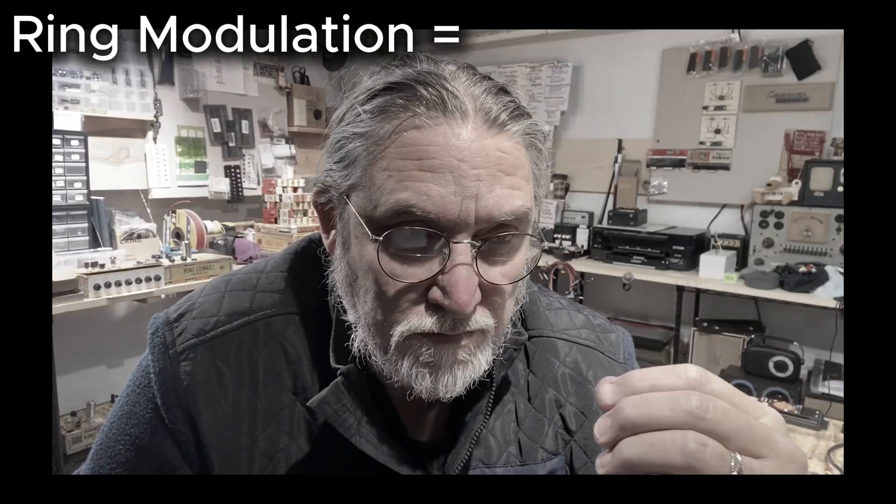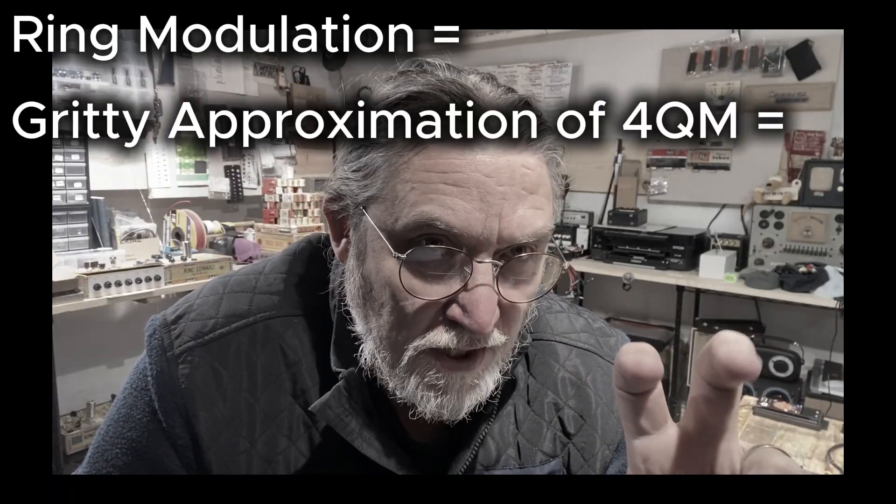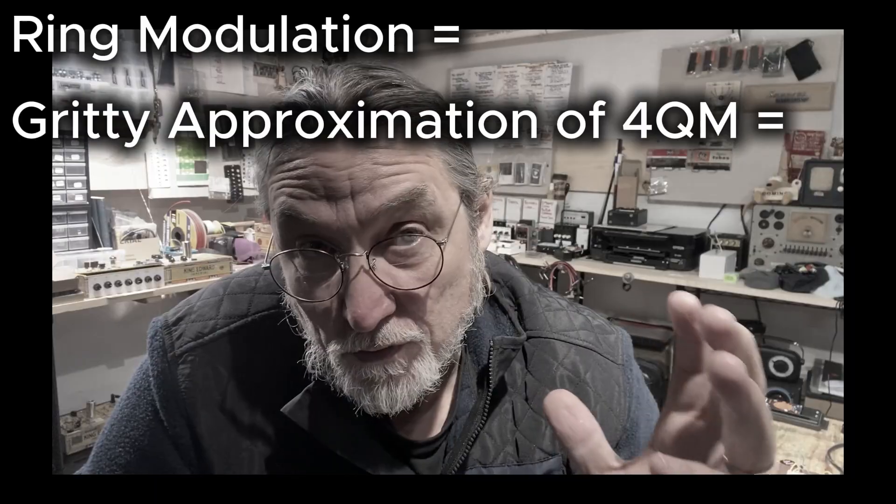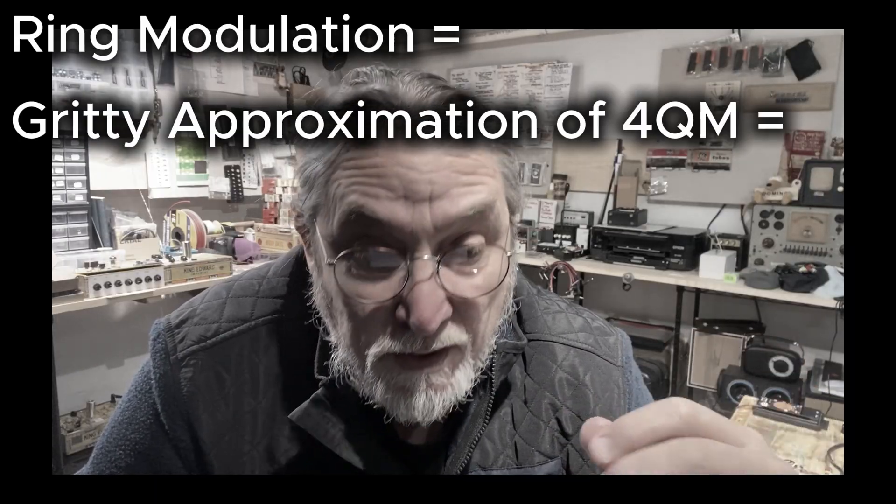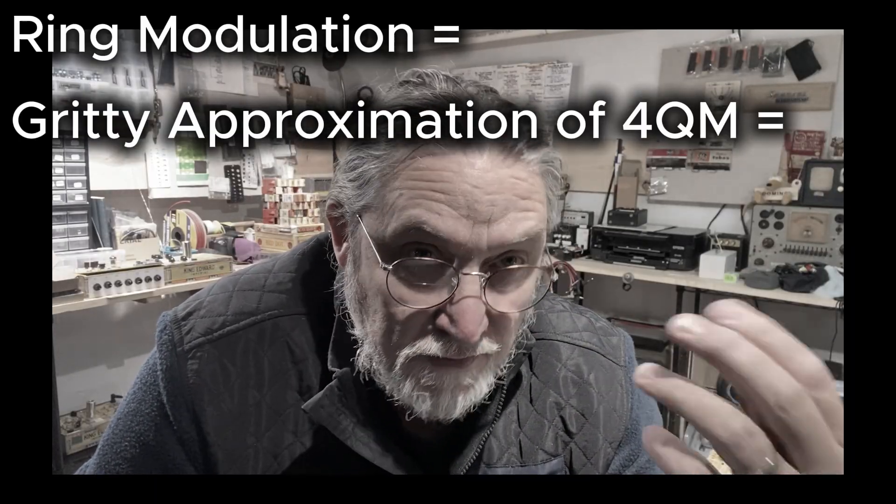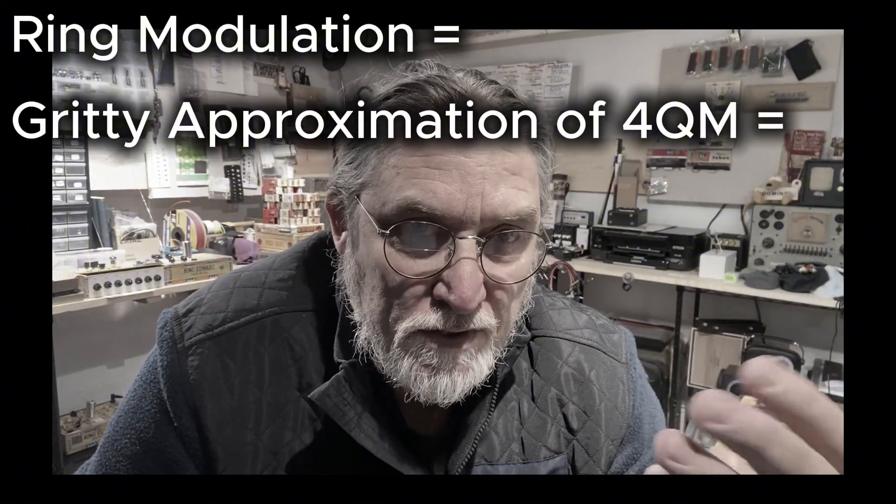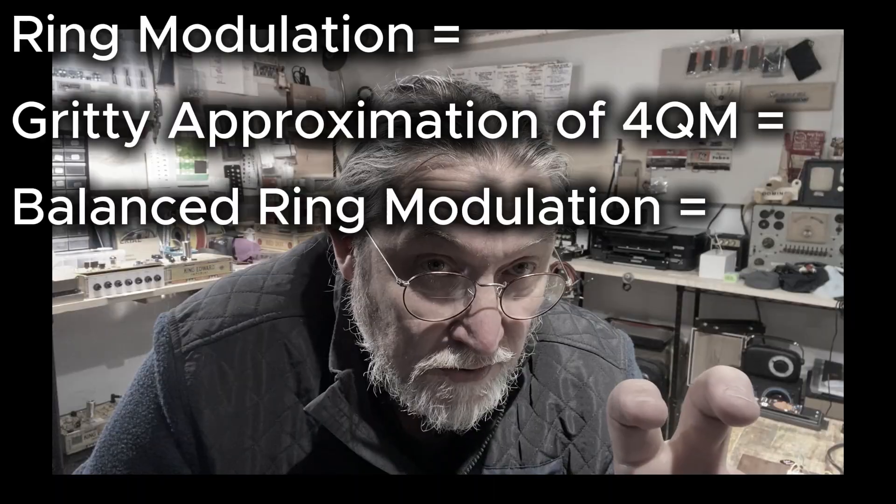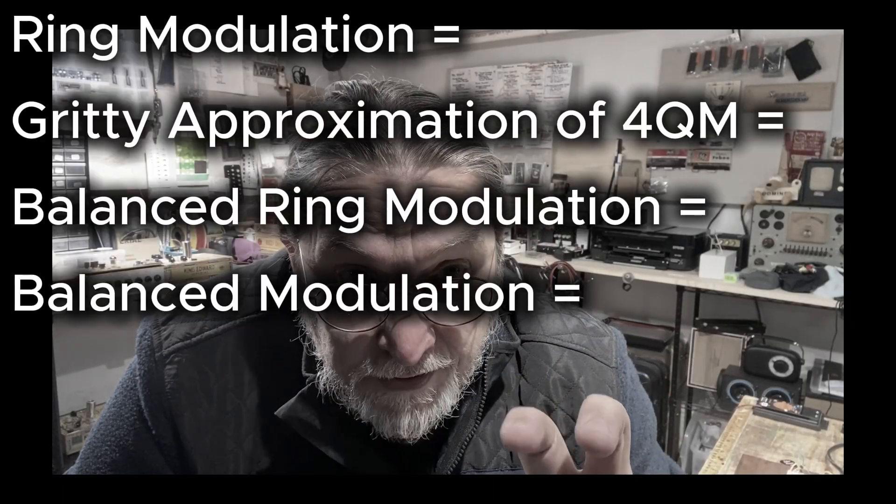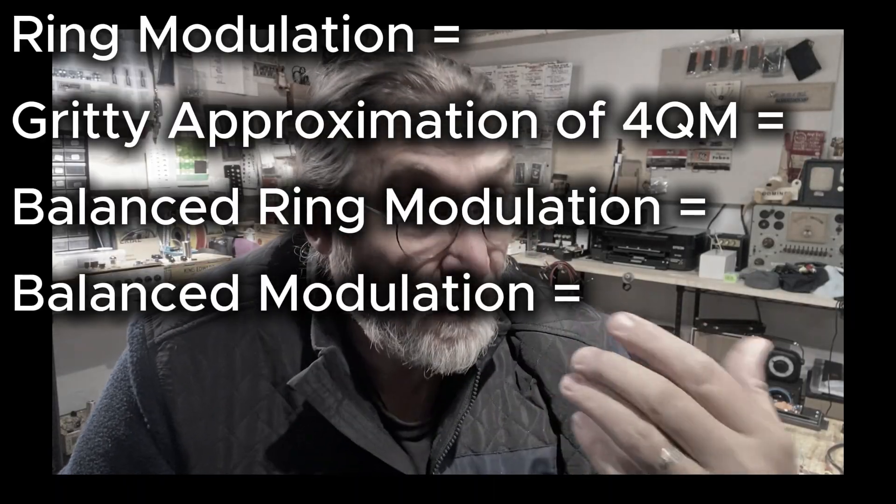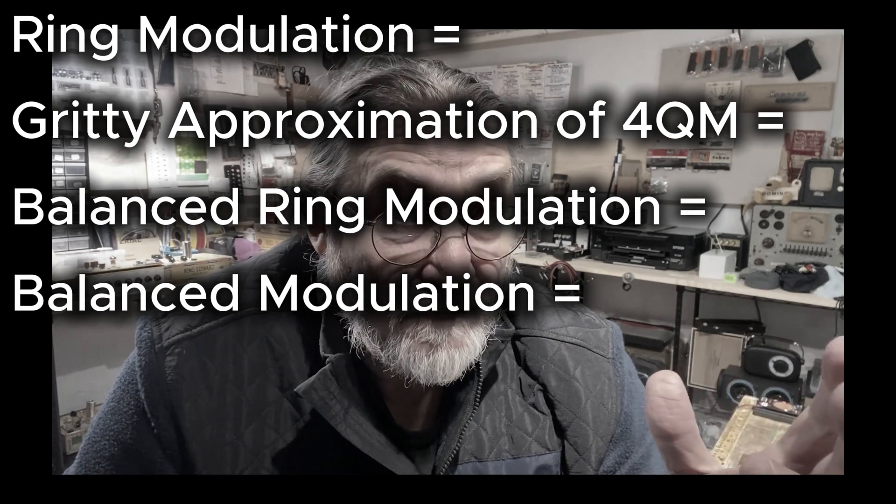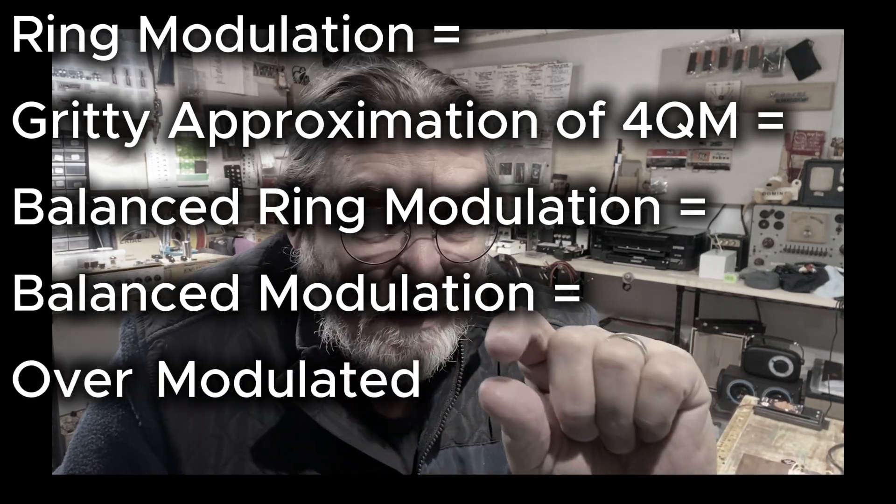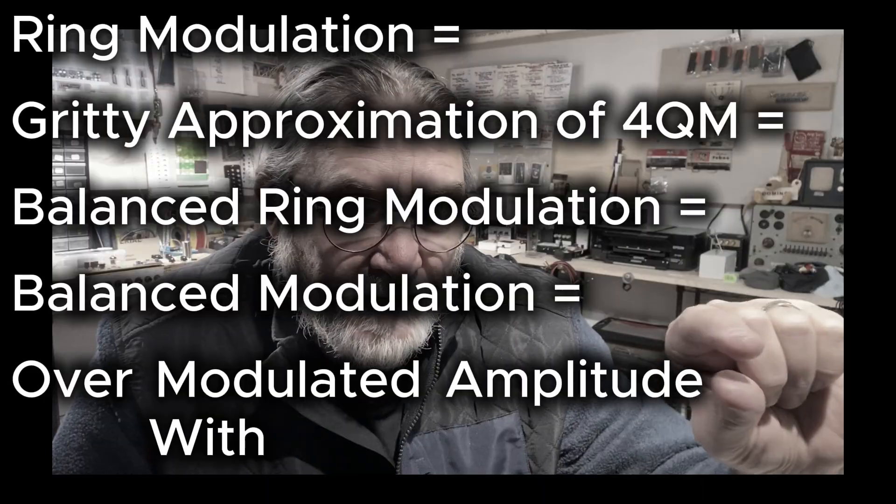I have to disambiguate some of the stuff here. Now ring modulation is also described as a gritty approximation of a four-quadrant multiplier. And to confuse things, a four-quadrant multiplier is often referred to as a balanced ring modulator, or balanced modulation, or my favorite, the over-modulated amplitude with phase inversion.